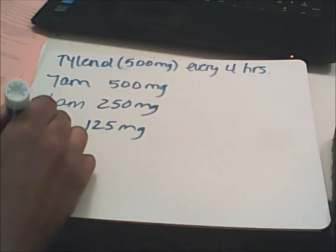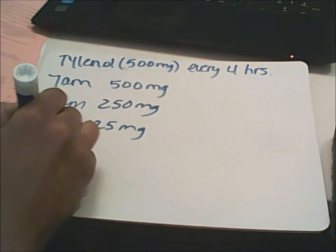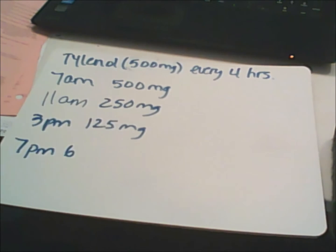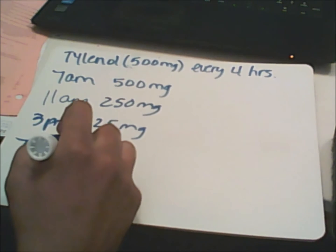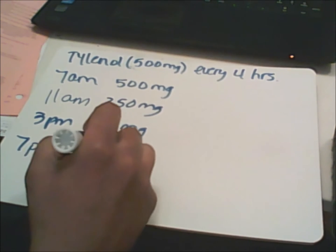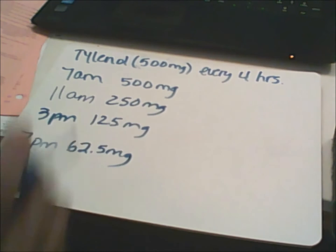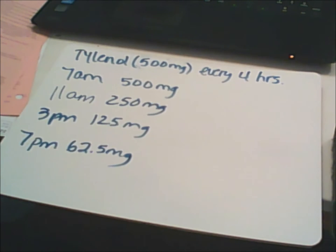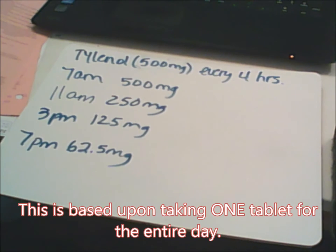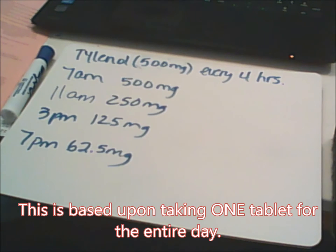Then by 7 p.m., once you get home, you would have half of 125 milligrams in your body, which is about 62.5 milligrams. This is the example of a person who forgot their meds at home and left without them.